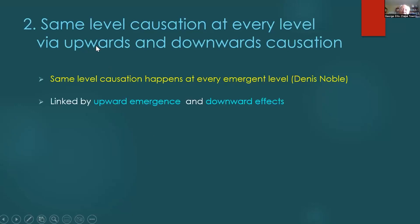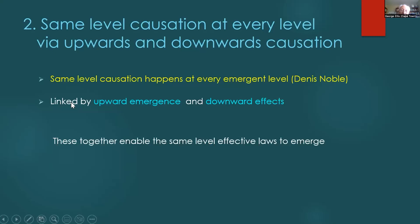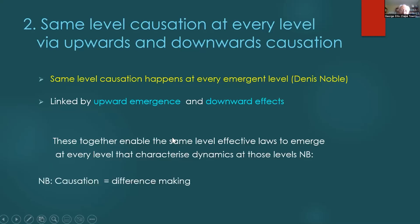Same-level causation emerges at every level by upward and downward causation. Same-level causation happens at every level, as my colleague Dennis Noble has emphasized, and it's linked by upward emergence and downward effects. These together enable the same-level effective laws to emerge at every level that characterize the dynamics of those levels. For the philosophers: causation, in the way I'm talking about, means difference-making — you can make a real difference and see the results, make an experimental difference and check it, or counterfactually work out that a difference at one level would cause a difference at other levels.